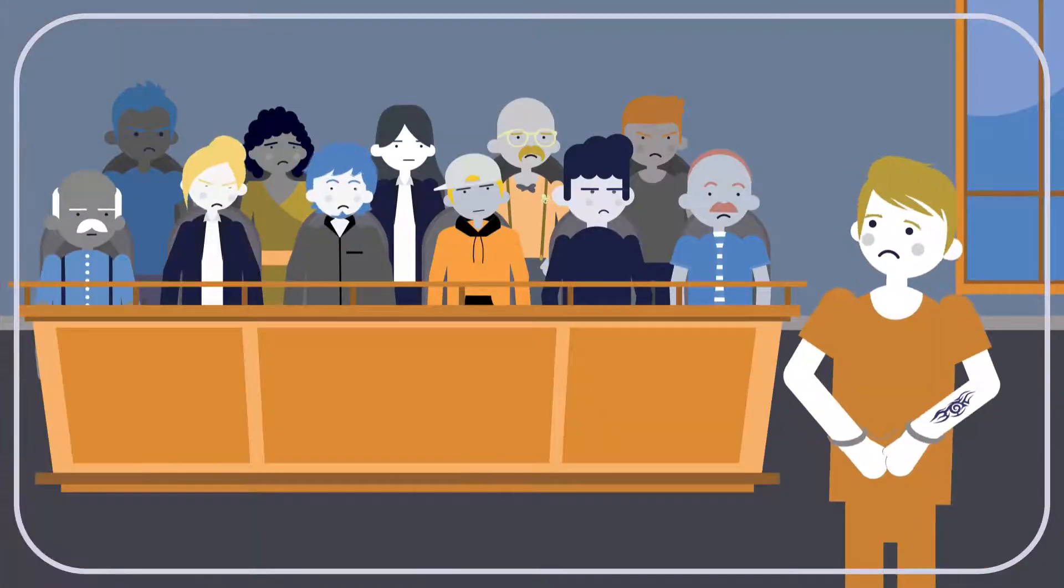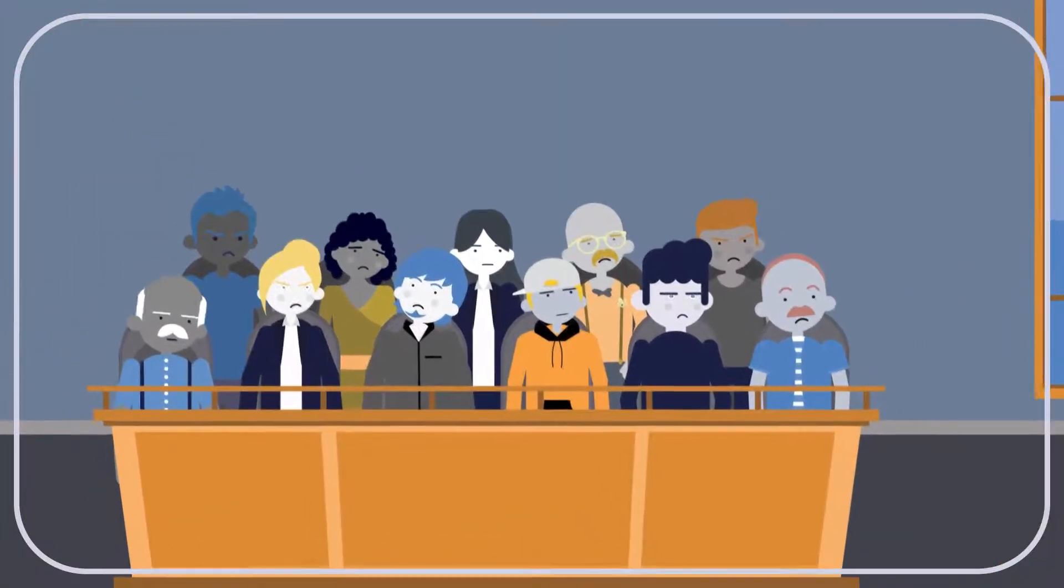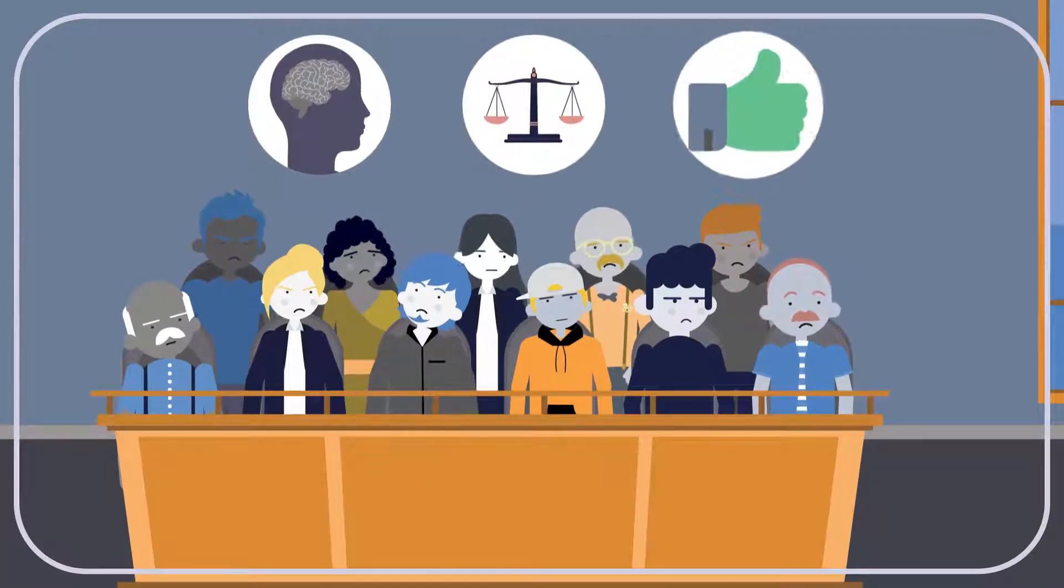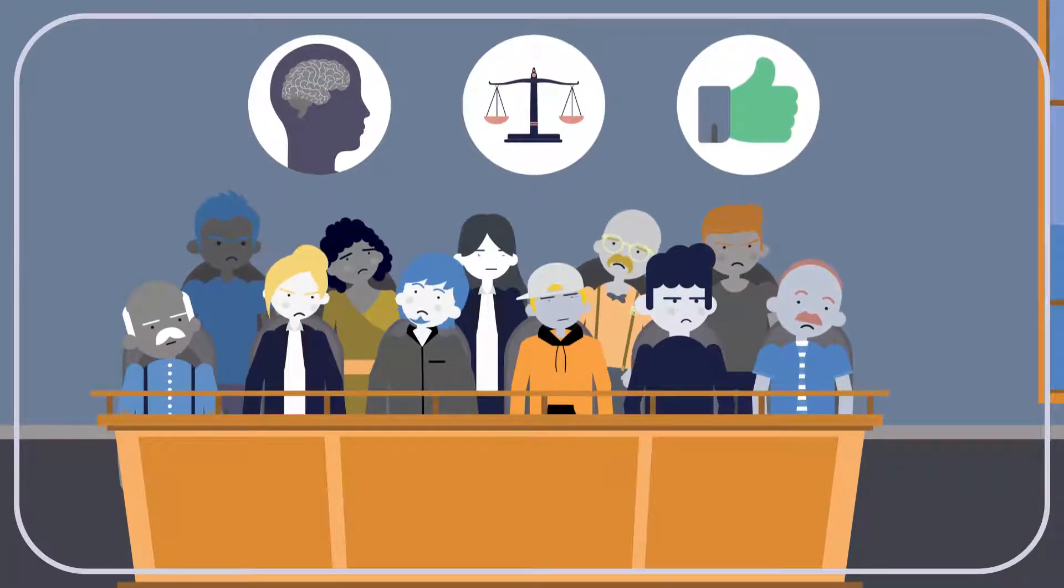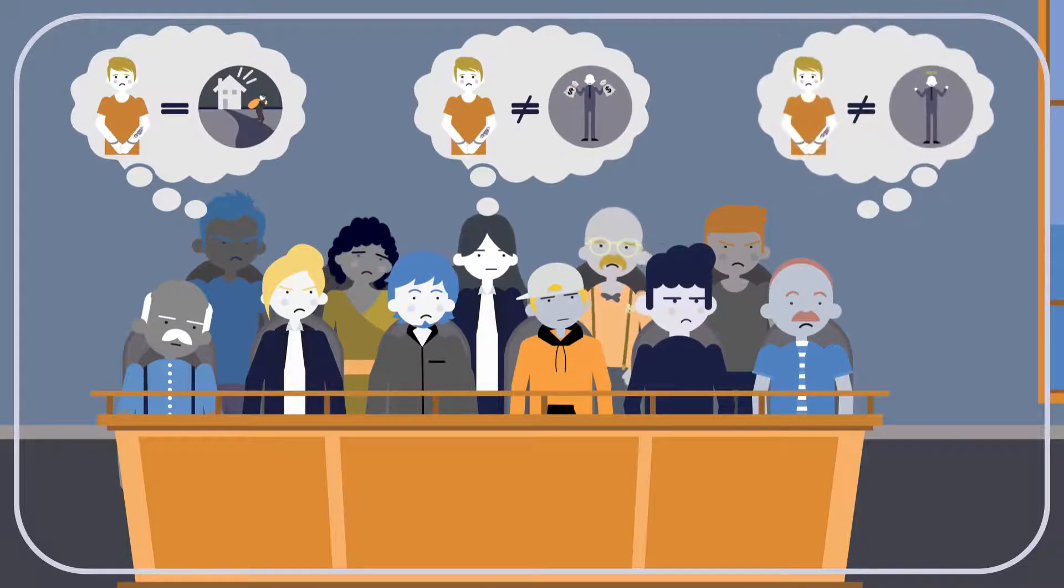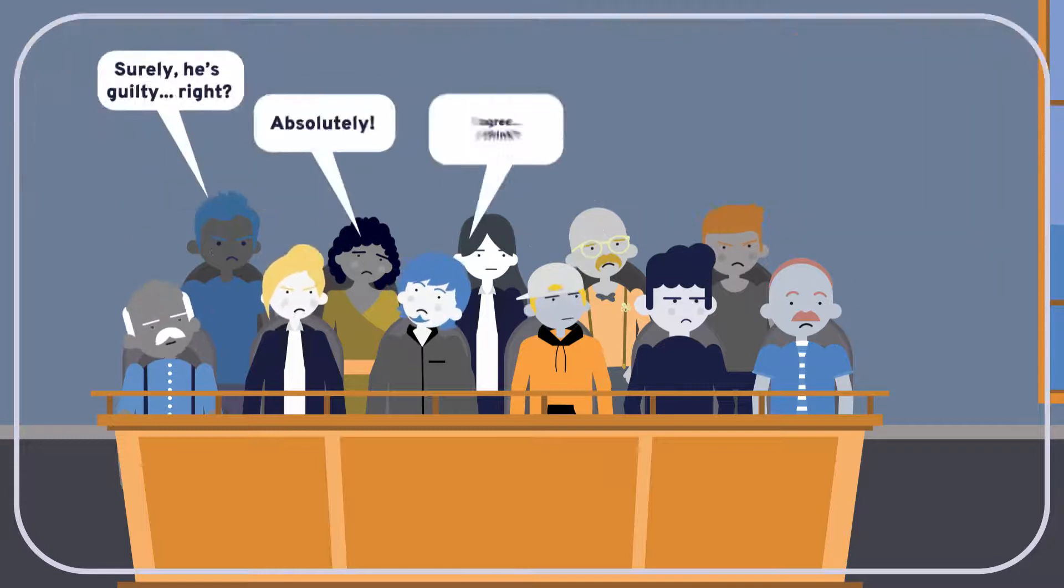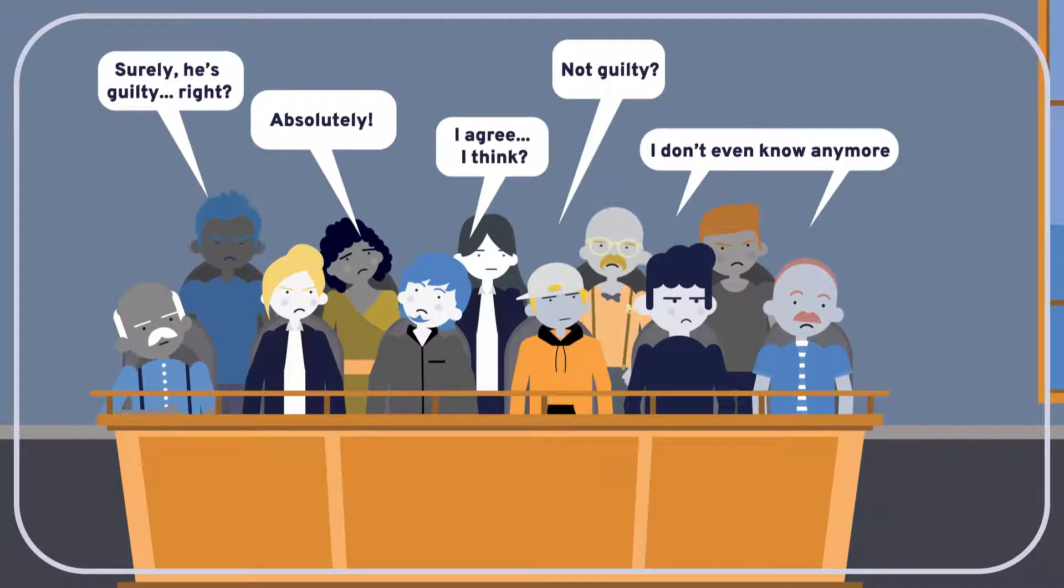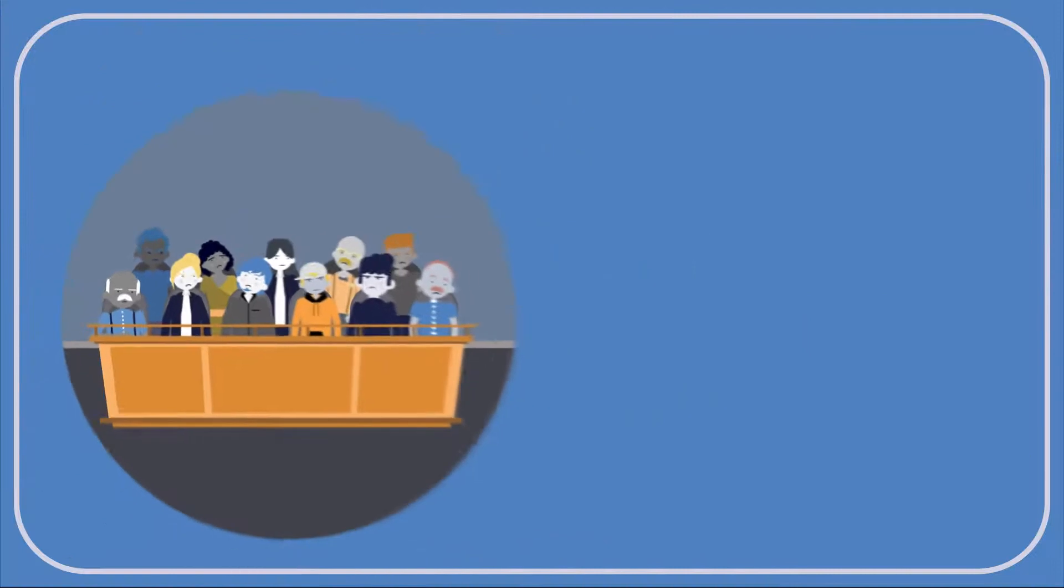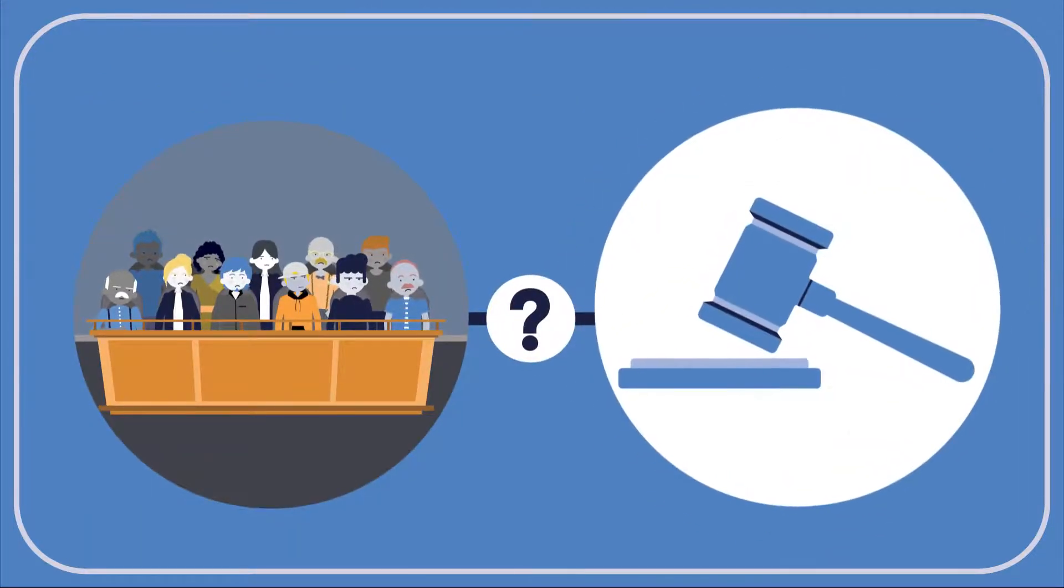Imagine a 12-person jury tasked with determining whether a suspect is guilty or not guilty. Each juror is intelligent, reasonable, and wants to make an accurate decision. But of course, each of them is limited. Like all of us, they bring their own assumptions and biases to the table, and none of them has access to all of the facts. Plus, everybody makes mistakes. Given their individual limitations, why think that letting the jury as a whole decide the question is a reliable way to arrive at the correct verdict?